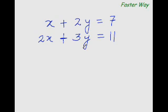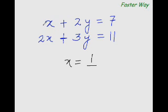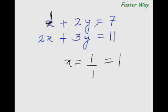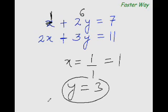Now let's solve a new set of equations using the crisscross technique. To find x: multiply this 2 with 11, then subtract the product of 3 and 7 — so 2 times 11 is 22, minus 3 times 7 is 21, giving 22 minus 21 equals 1. For the denominator: 2 times 2 is 4, minus 1 times 3 is 3, so 4 minus 3 is 1. Therefore x equal to 1. Substituting into the equation: 1 plus something equals 7, that's 6, and 2 times 3 equals 6, so y equal to 3.